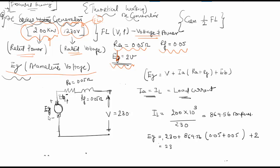This equals 230 plus 86.95 plus 2, which equals 318.95 volts. So EG equals 318.95 volts at full load.